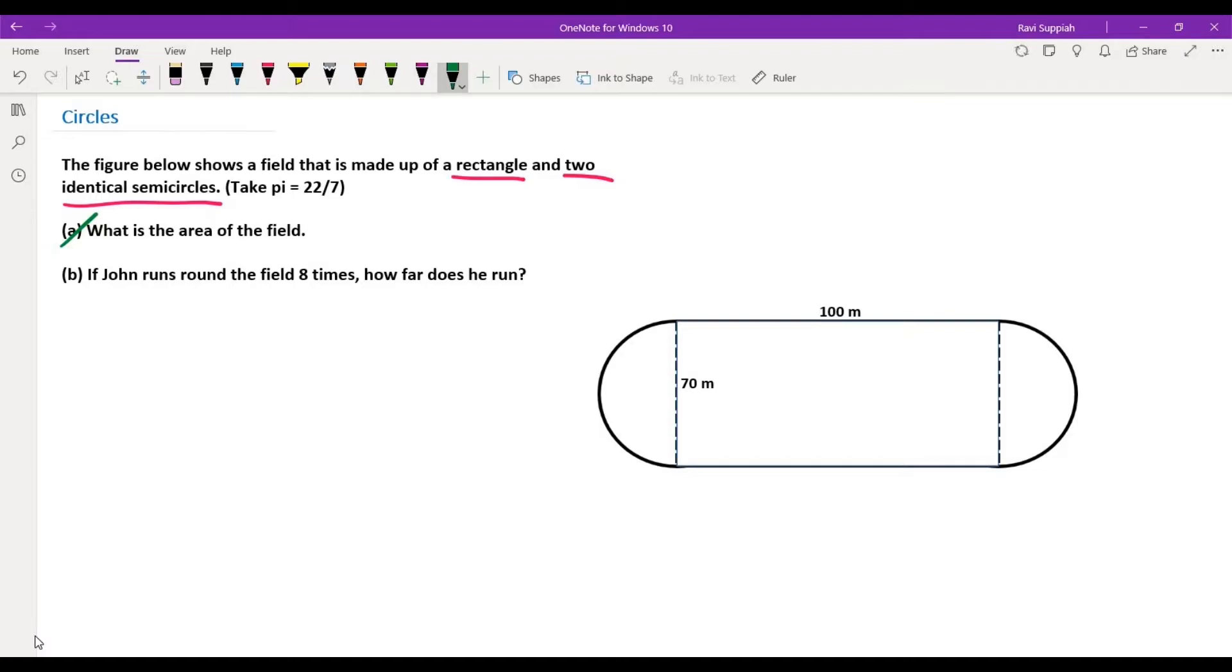Now let's go ahead and solve this part A first. As we can see, the field has three separate parts. The one in the center is basically this rectangle. So this area here, we can say it is 100 times 70, which will give us 7000 meter square.